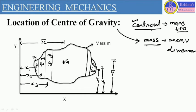The location of centroid and location of center of gravity is completely different because centroid we generally define for a two-dimensional object, mostly two-dimensional, and the center of gravity we generally define for a three-dimensional object. Now, how we can define center of gravity? Here we will refer to the same diagram which we have seen in the location of centroid, and we are considering one body of arbitrary shape.